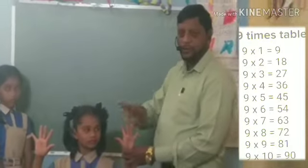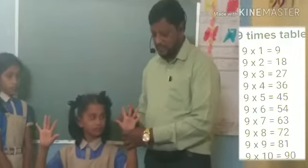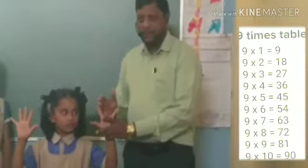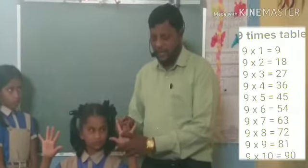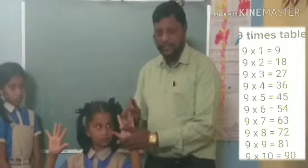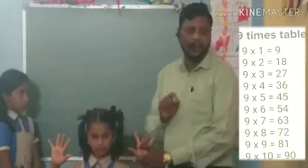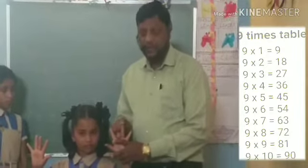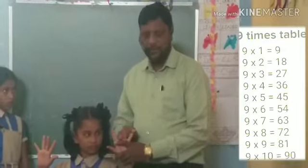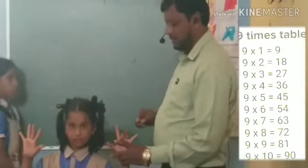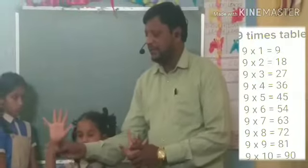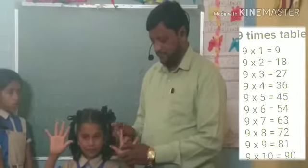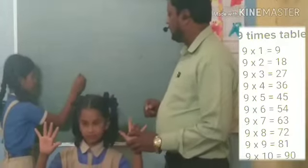Now I am going to close the third finger for 9 times 3. After closing the finger, how many fingers are there? 2 — 1, 2. And before the closing finger: 1, 2, 3, 4, 5, 6, 7. So the answer for 9 times 3 is 27. Right!